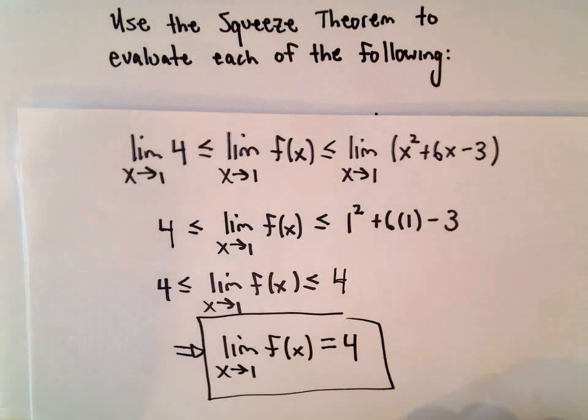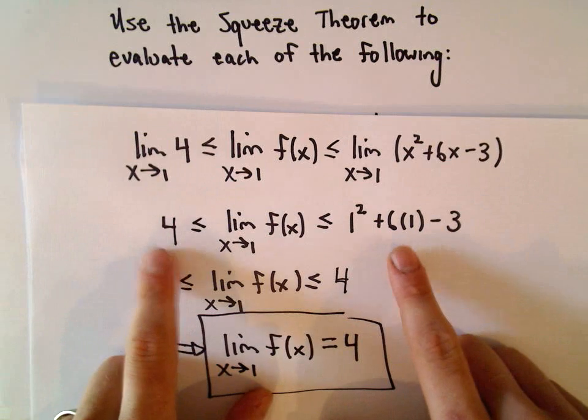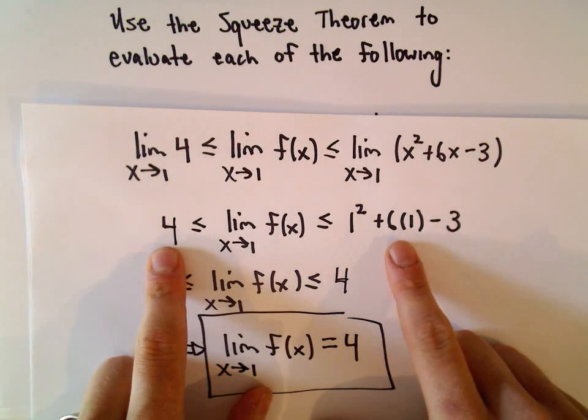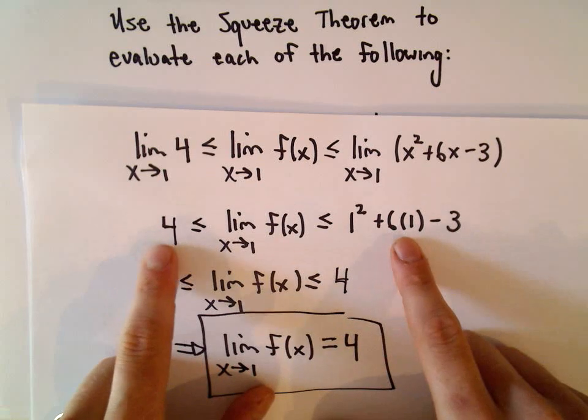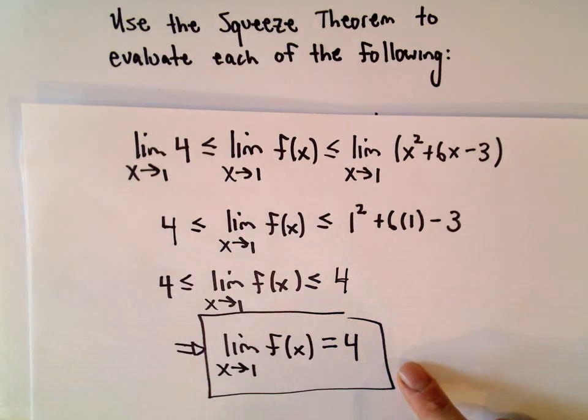Okay, so what you're doing is you're deducing information about the limit of some function by knowing information about a function that's smaller than it and a function that's larger than it. So it's an indirect way to get information about the original function.